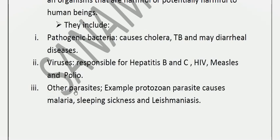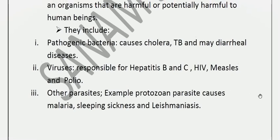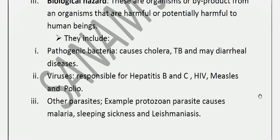Parasites such as protozoans and helminths are also biological hazards. Protozoan parasites cause diseases such as malaria (Plasmodium), sleeping sickness (Trypanosoma), and leishmaniasis. Helminths such as roundworms cause intestinal tract infections. All these microorganisms negatively affect human health.